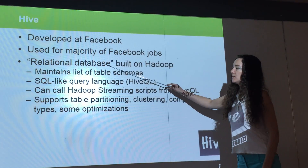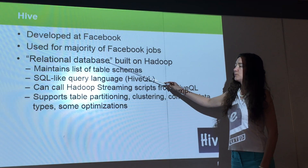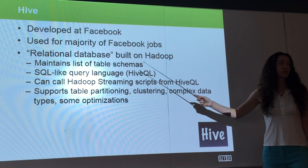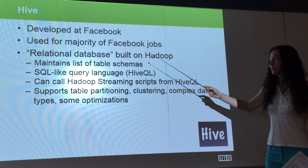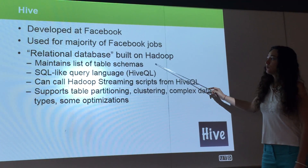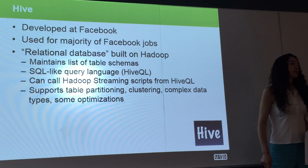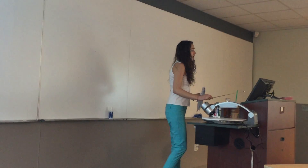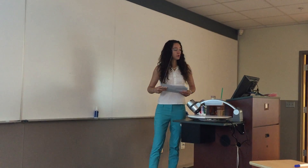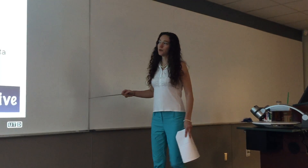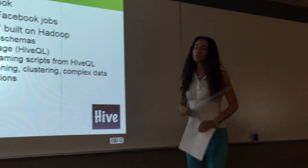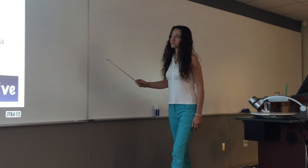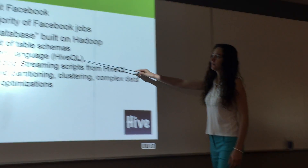In a sense, Hive can be called a relational database because the data that is loaded is in a structured form, similar to regular relational databases. It will create tables and schemas, and we can link the tables together. It has its own query language, which is very similar to SQL, so we can issue SQL-like queries with Hive. It is called Hive Query Language.